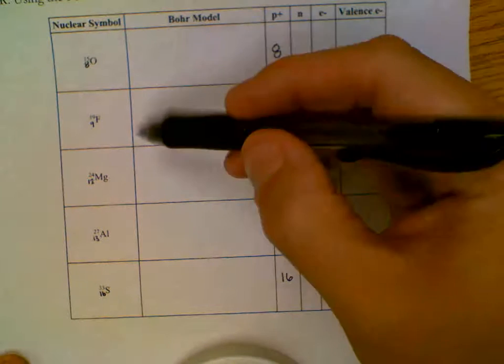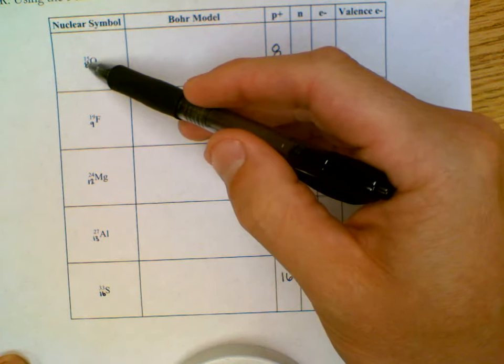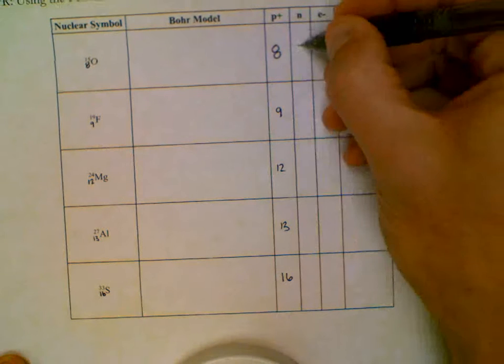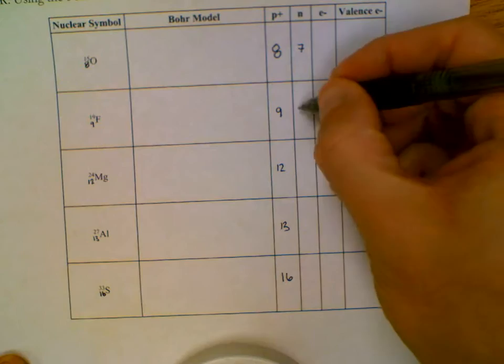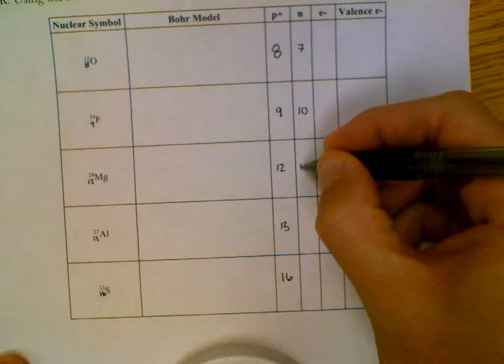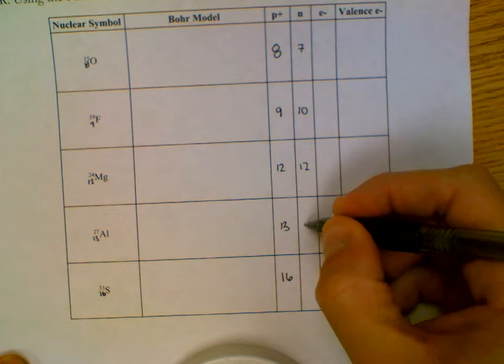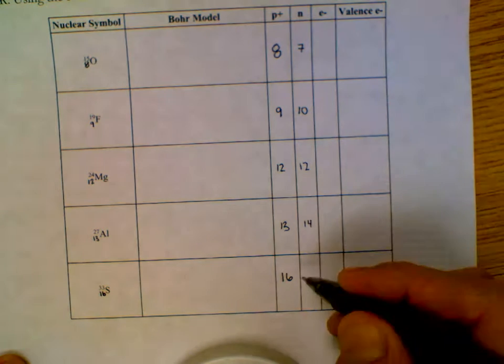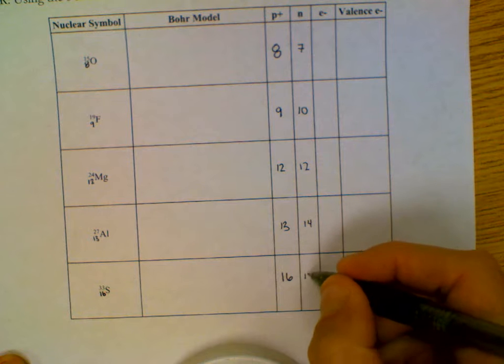Neutrons are the top number, the mass number, minus the protons. 16 minus 8 is 8. 19 minus 9 is 10. 24 minus 12 is 12. 27 minus 13 is 14. And 33 minus 16 is 17.